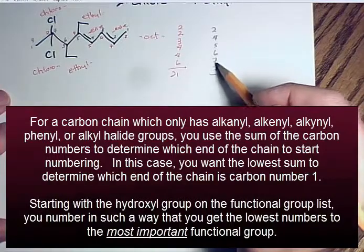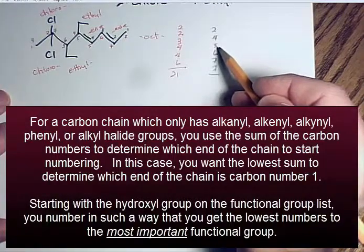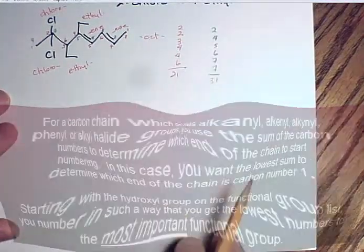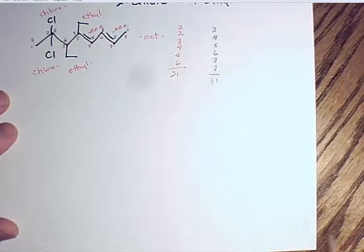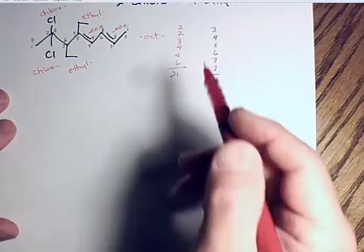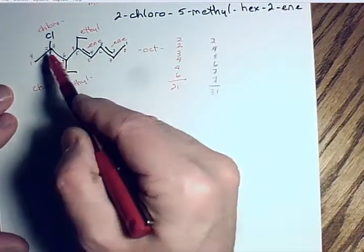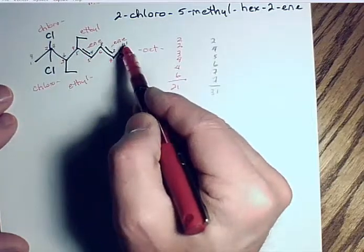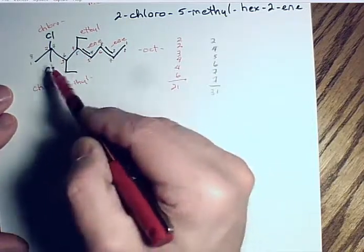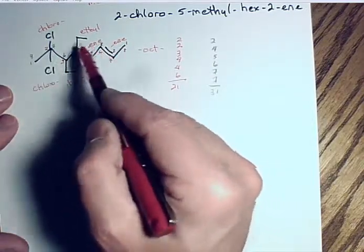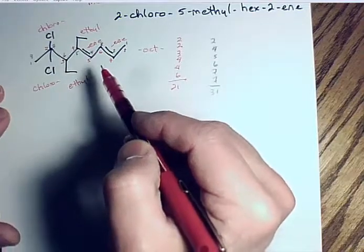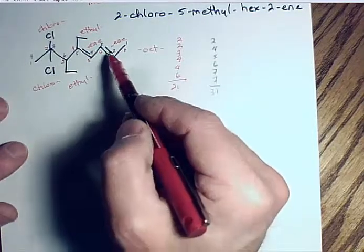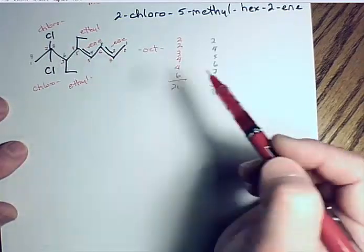Working through another example: summing carbon locations gives 14, 20, 29, 31. We want to number from the left because overall that gives the lowest numbers to the functional groups, since all functional groups have the same importance for numbering at this stage.